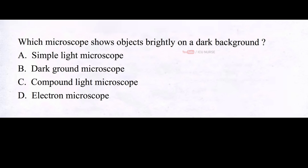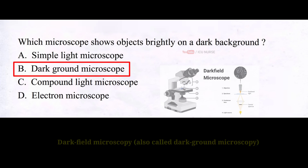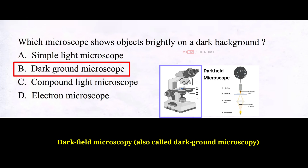Which microscope shows objects brightly on a dark background? A. Simple light microscope, B. Dark ground microscope. The dark ground microscope highlights objects by using a dark background, making them stand out distinctly. This creates a sharp contrast, making small details easier to observe.